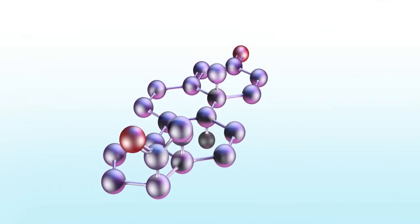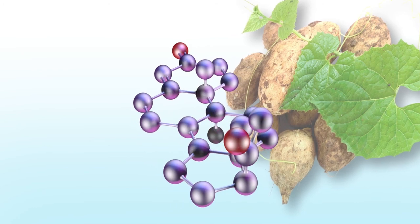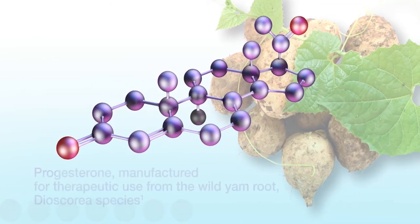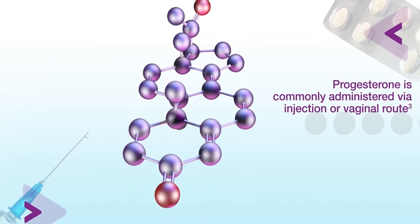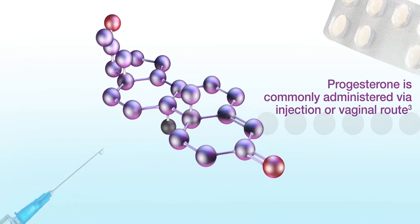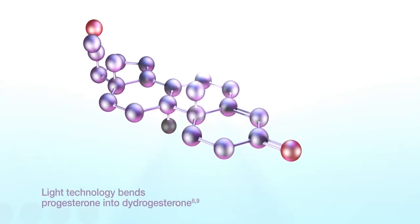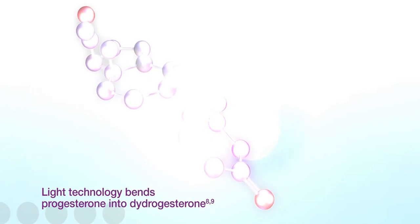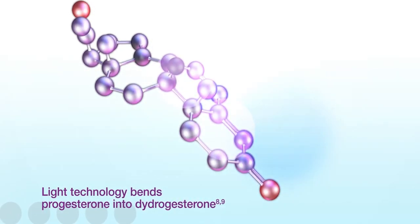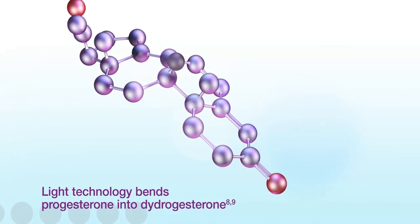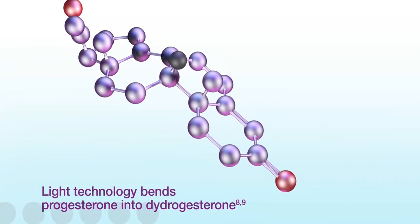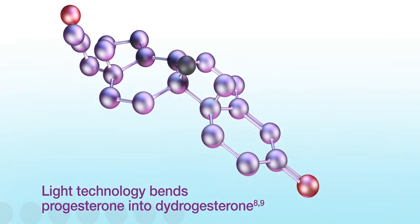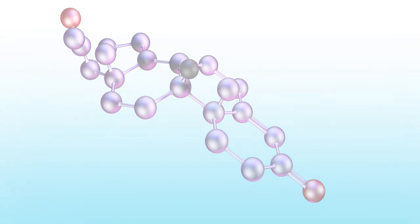Progesterone is a steroid comprising three cyclohexane rings and one cyclopentane ring. It is manufactured for therapeutic use from the wild yam root Dioscorea species. Due to rapid first-pass liver metabolism, progesterone has variable concentrations and very low oral bioavailability. Therefore, it is administered via injection or vaginal route, which are not easy to use and are associated with side effects. Dydrogesterone was introduced for clinical use under the trade name Dufaston in the 1960s for treatment of conditions associated with progesterone deficiency. The manufacturing process of dydrogesterone is highly complex: it starts with chemical modification of progesterone, followed by a critical transformation phase using UV light at an appropriate wavelength, intensity and time sequence, resulting in a unique modified retrosteroid structure.